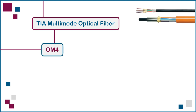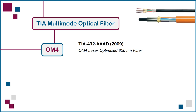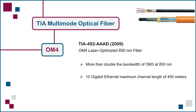OM4 was first defined in 2009 in TIA 492-AAAD. It is a higher performance standard for laser-optimized 50-micron multimode fiber, with more than double the bandwidth of OM3 at the short wavelength of 850 nanometers. Using OM4 multimode fiber, a 10 Gigabit Ethernet channel has a maximum length of 400 meters compared to 300 meters for OM3. For 100 Gigabit Ethernet, OM4 has a reach of 100 meters versus 70 meters for OM3.